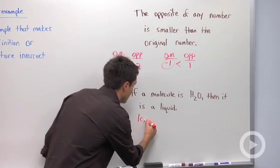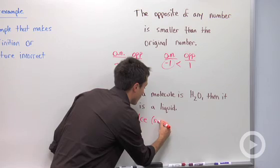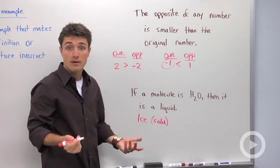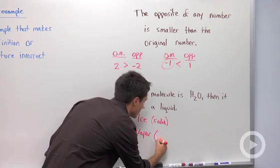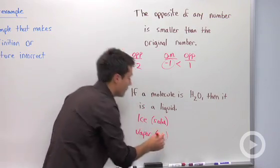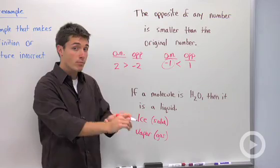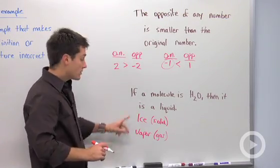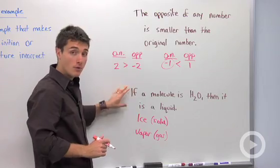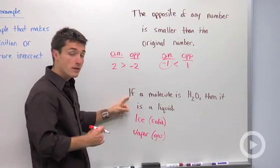It could come in ice, which is the solid form, or it could come in as vapor, or steam. So this is your gaseous form. So depending on temperature and pressure, water could also be ice or vapor. So both of these are statements, or examples, that make this statement incorrect.